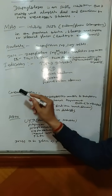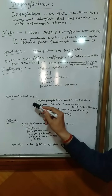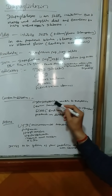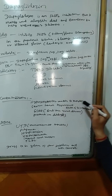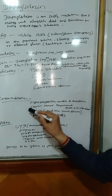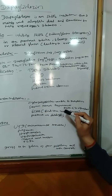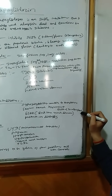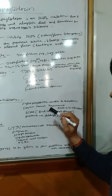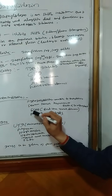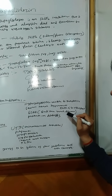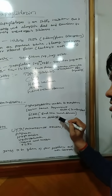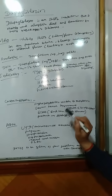Coming to the contraindications, it cannot be given in patients with hypersensitivity reactions to Dapagliflozin, those patients having severe renal impairment — that is eGFR less than 30 ml per minute per 1.73 m² — we cannot use Dapagliflozin. Also in end-stage renal disease and patients on dialysis, we cannot use Dapagliflozin.